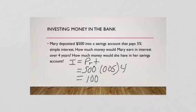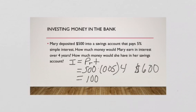So after four years, she would have earned $100 in interest. Now for the second question — how much money would she have in her savings account after four years? That would be $600. How did I get $600? I added the $500 plus the $100.